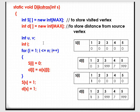For i equal to 1, i less than or equal to n, i plus plus — we are initializing S[i] to 0. The visited vertices are represented as 1, and unvisited vertices are represented as 0. Initially, all the vertices are unvisited, so we are initializing them to 0.